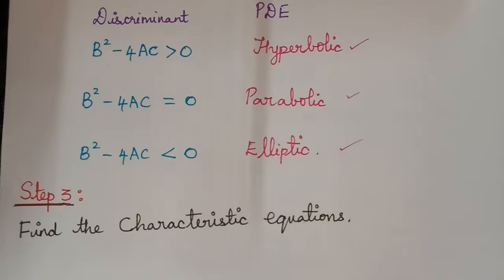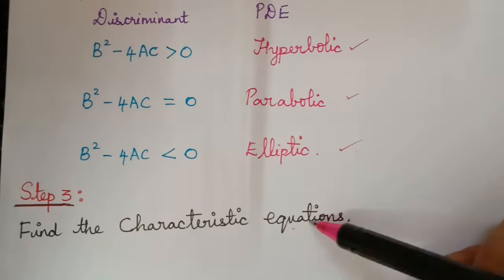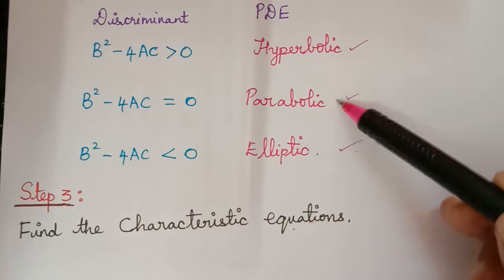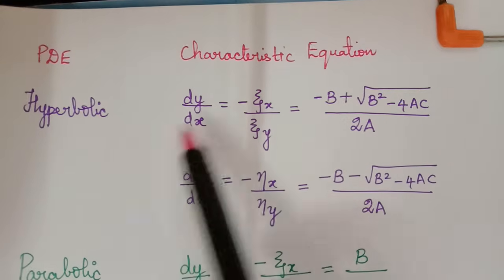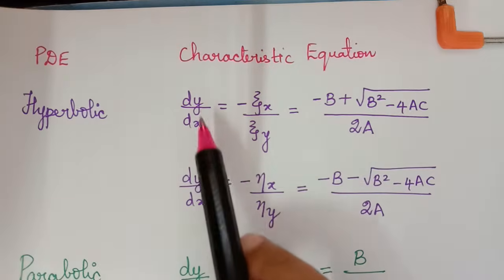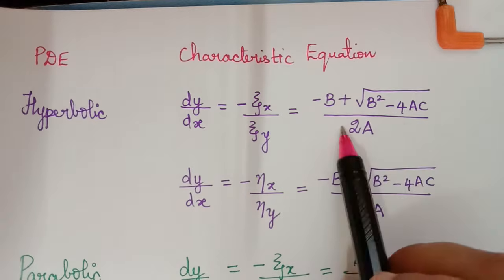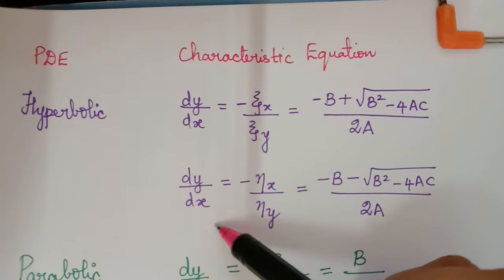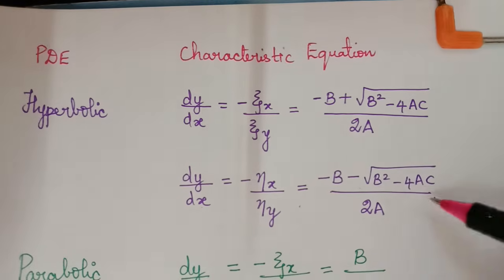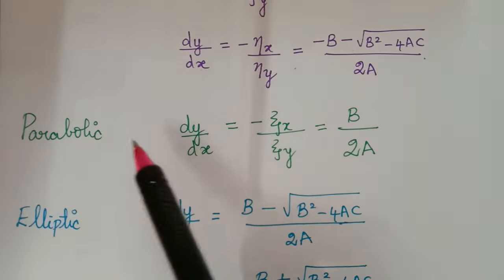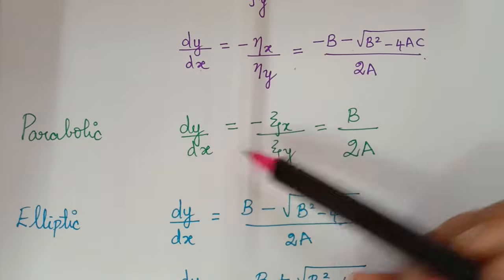The next step is to find the characteristic equations. The characteristic equations differ based on the classification. For hyperbolic type, the two characteristic equations are given by dy/dx equals (-B plus square root of B²-4AC) / 2A and dy/dx equals (-B minus square root of B²-4AC) / 2A. For parabolic type, the characteristic equation is dy/dx equals B / 2A.